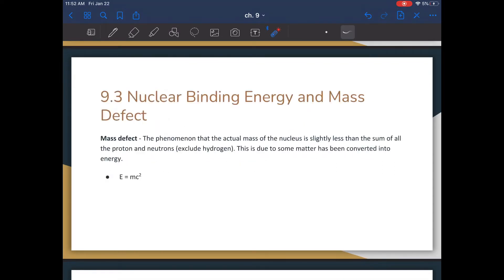Chapter 9.3 is about nuclear binding and the mass defect. The mass defect is a phenomenon where the actual mass of a nucleus is actually slightly less than the sum of all the protons and neutrons, and this excludes hydrogen because hydrogen only has one proton. And this is because in the process of binding, some of the matter has been converted to energy. So if you're ever asked why there is a defect, this is why. In order to calculate the nuclear binding energy, you'll use the equation E equals MC squared, where M is the mass that's missing, C is the speed of light, and E is the amount of nuclear binding energy.